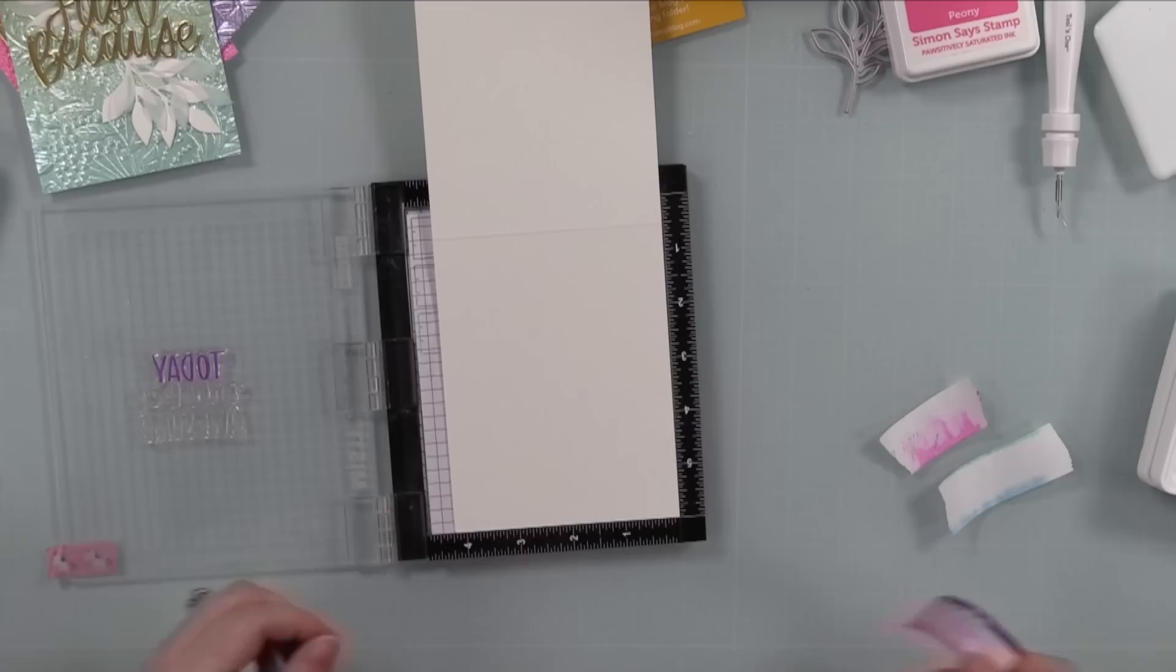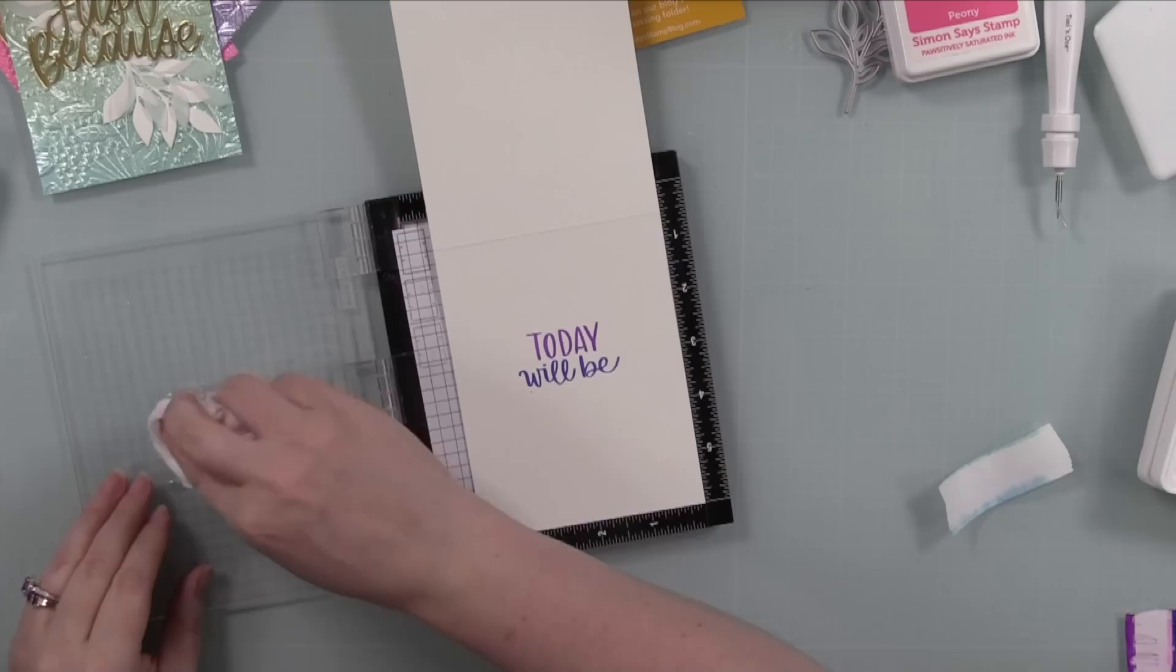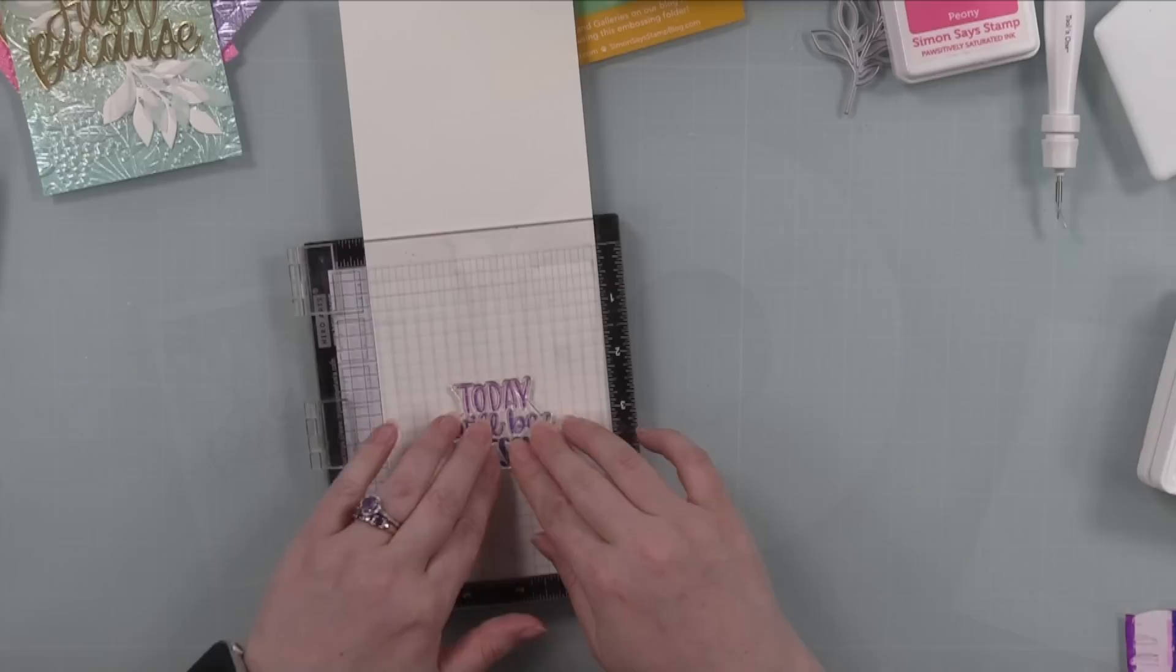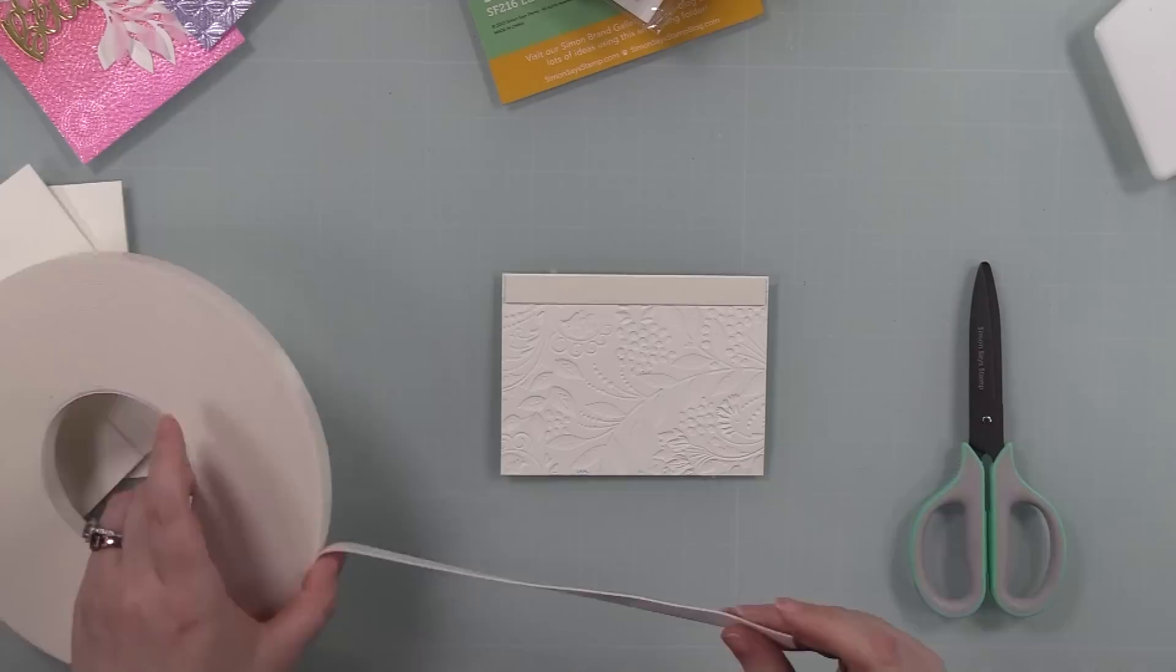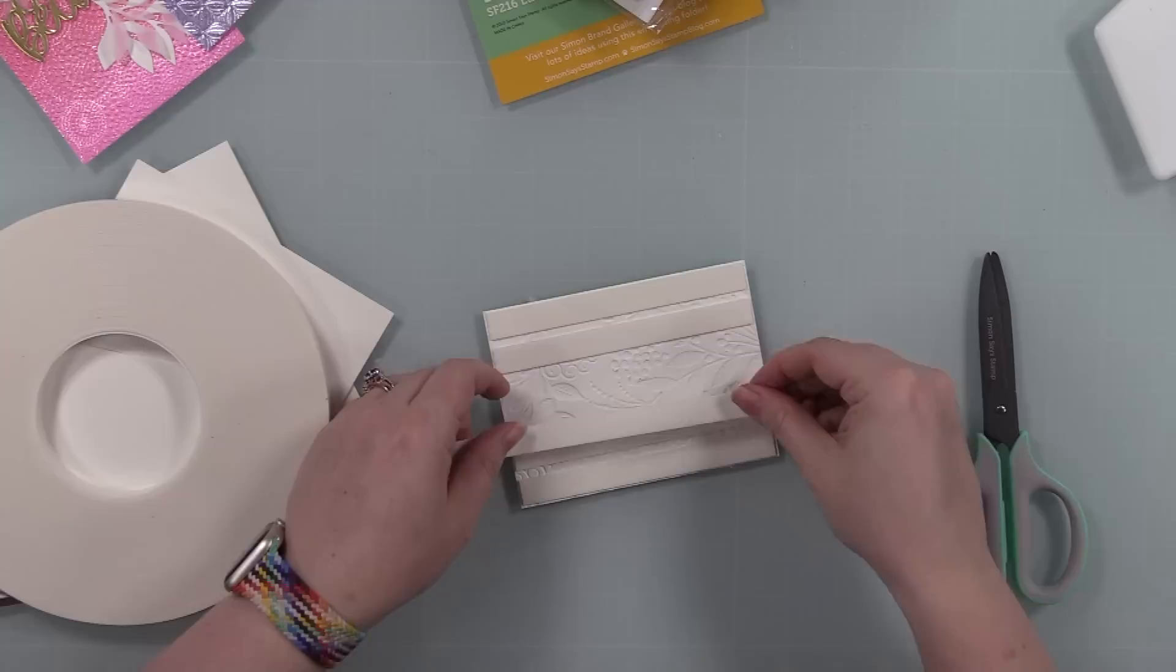So masked off so that only the first word was visible and inked that up, and then masked off the top and the bottom. Repeat, repeat, repeat. Super simple. And it just gives the inside—I kept the inside simple. I put the time and effort into making them multi-colored so it ties in with the front. And then it's just a great sentiment. I was like, these are fun cards, you know, literally "just because" and "today will be awesome."